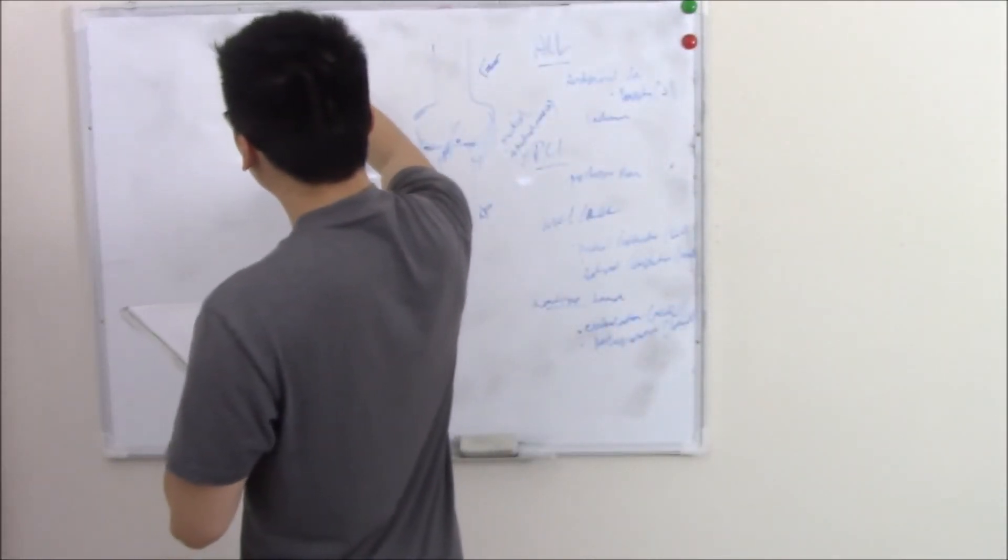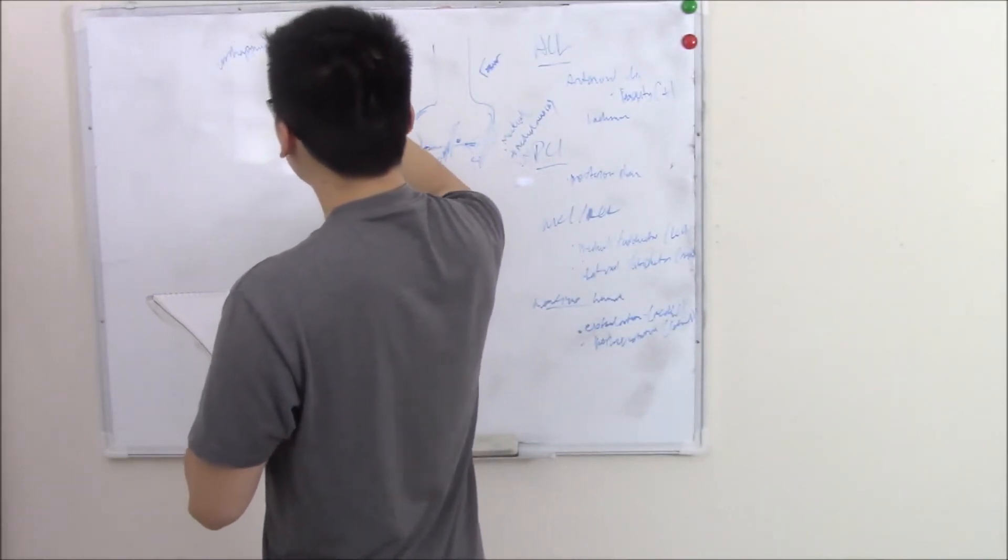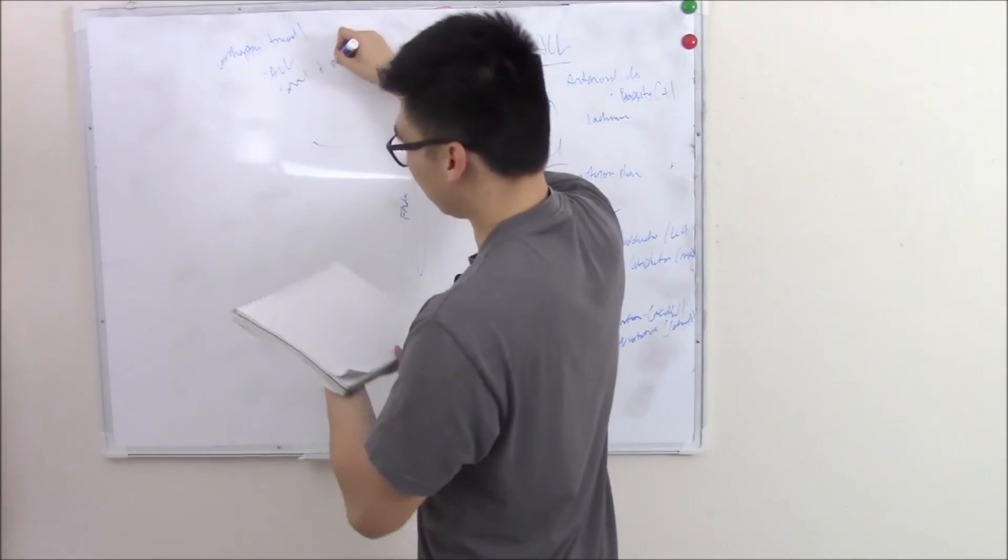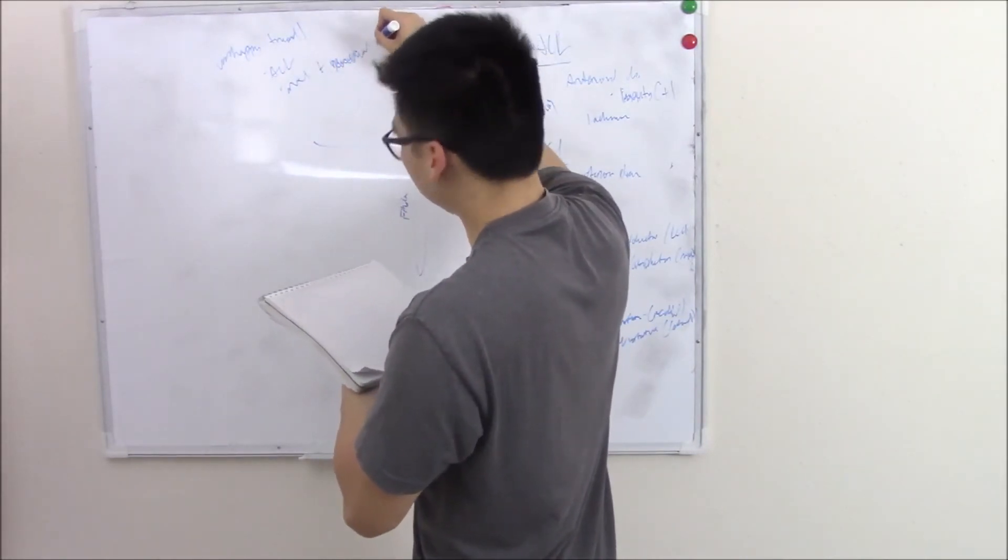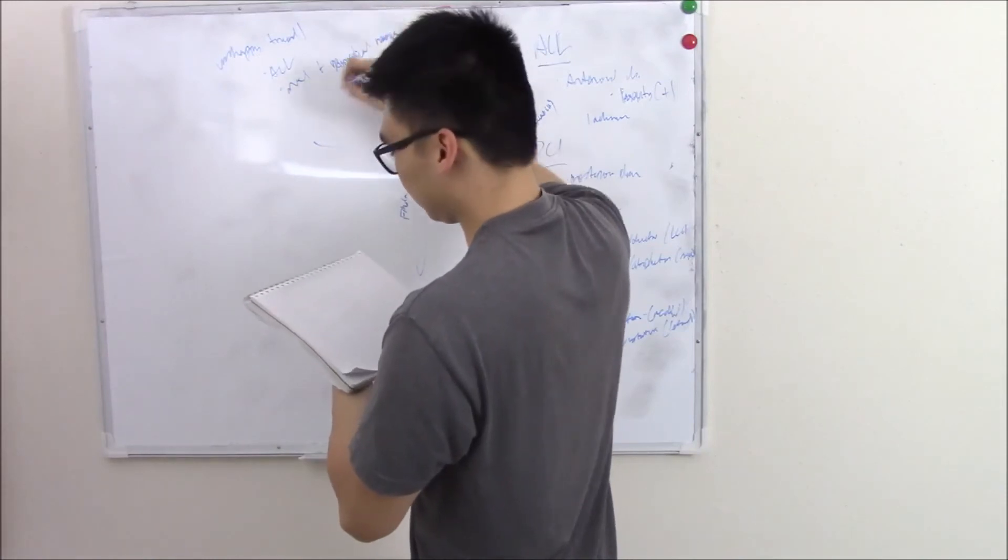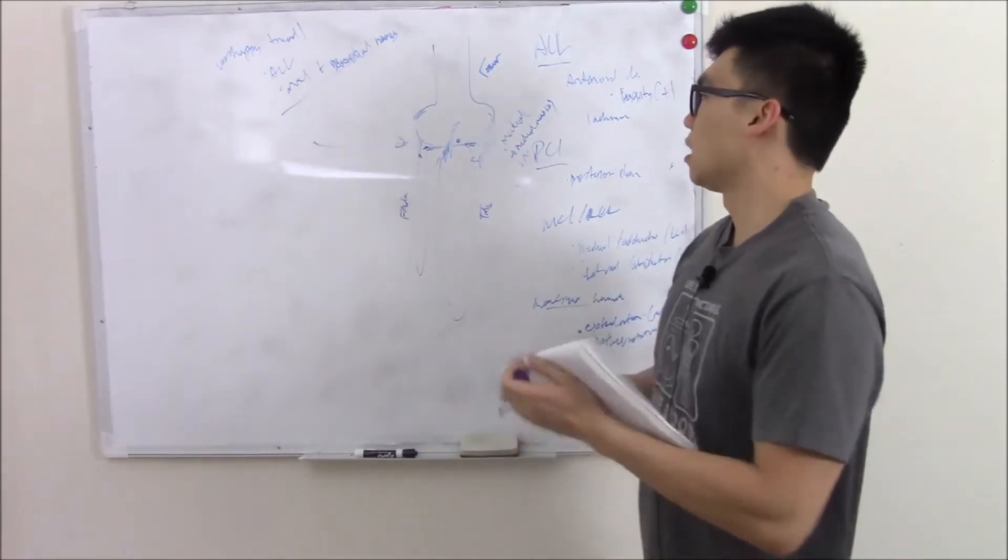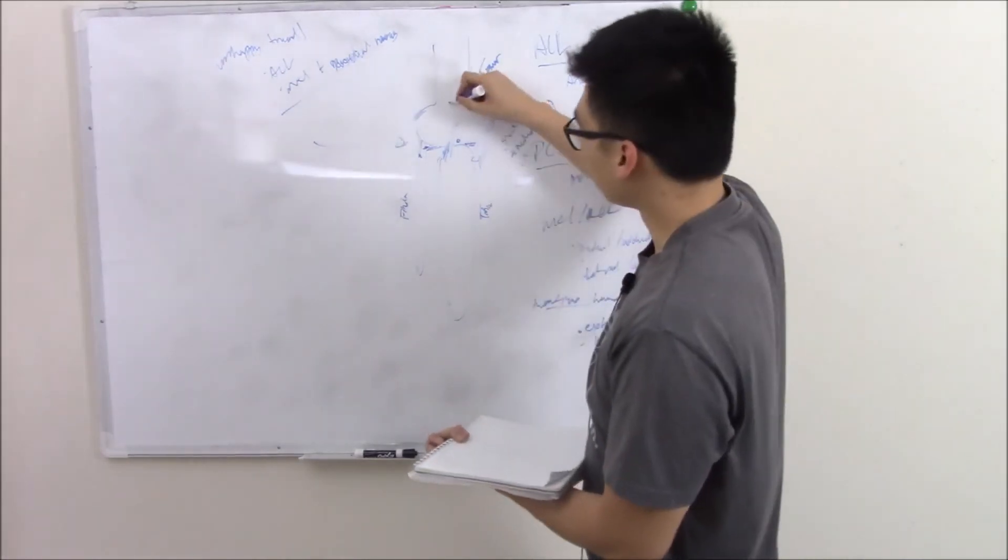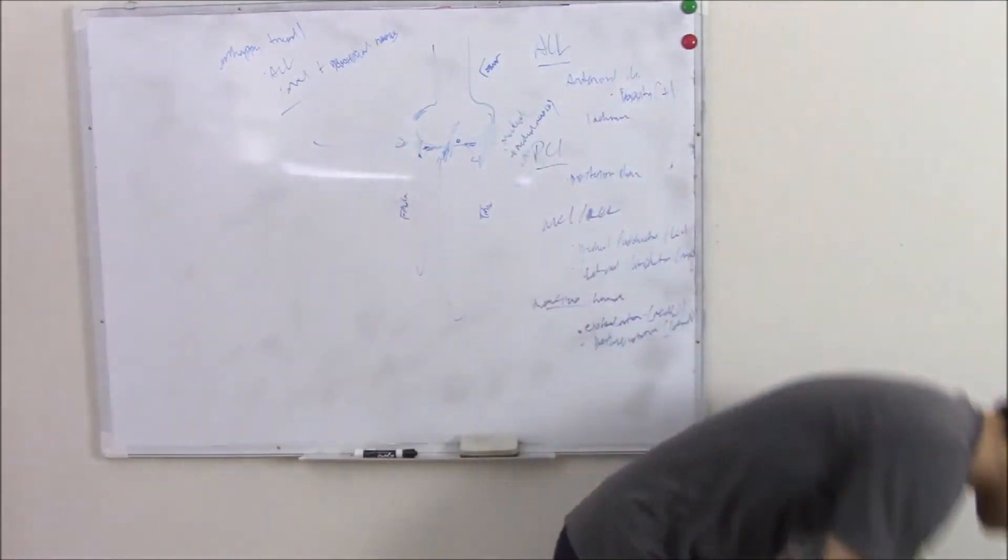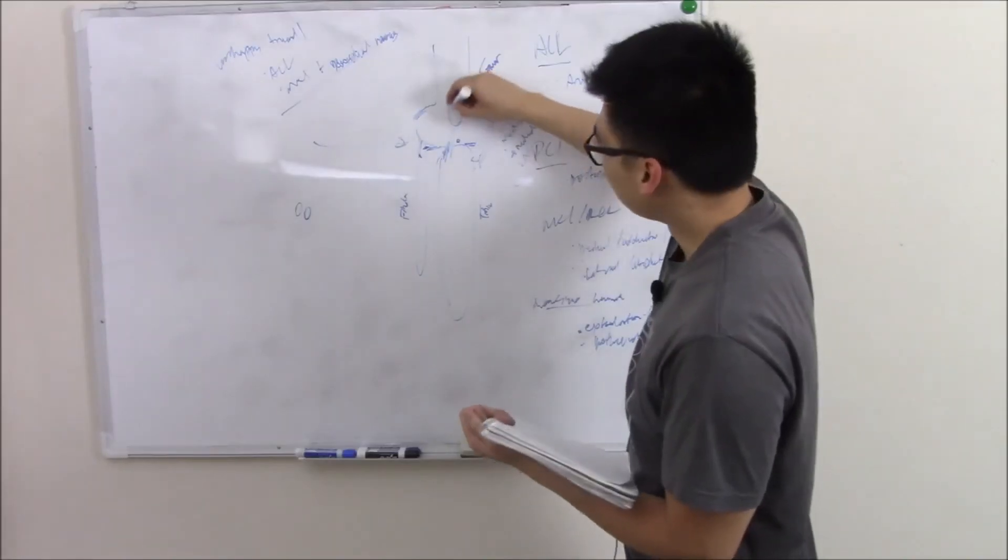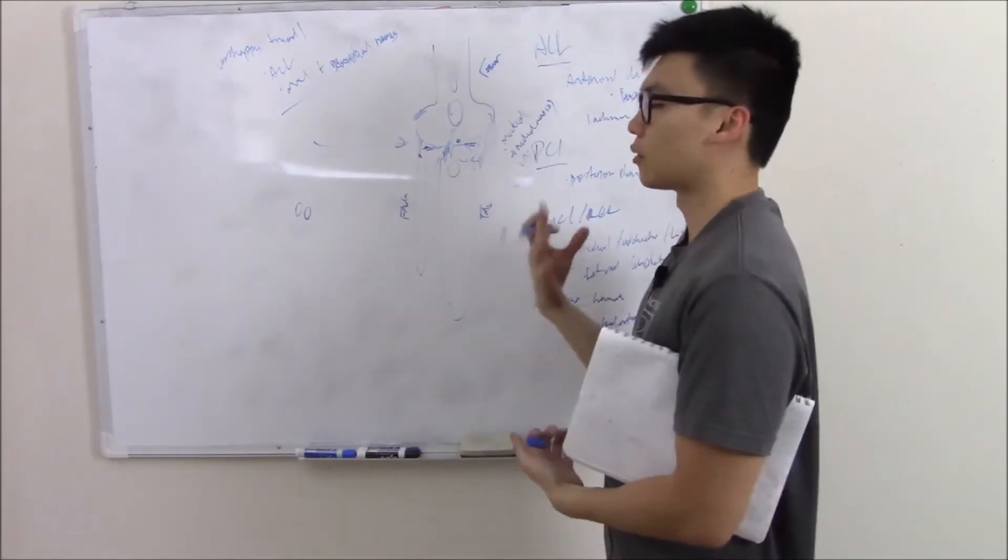Unhappy triad - that's your ACL, your MCL, and your medial meniscus. That's enough to talk about ligaments. Let's talk about something else. We can talk about bursa. What are bursae? Bursae are these little fluid-filled sacs. I'm out of markers.